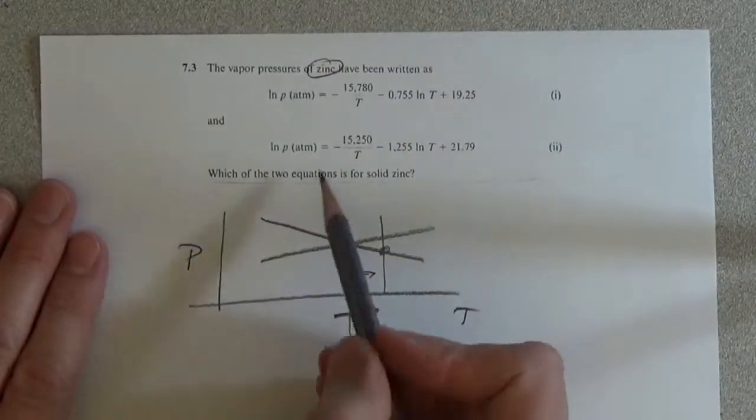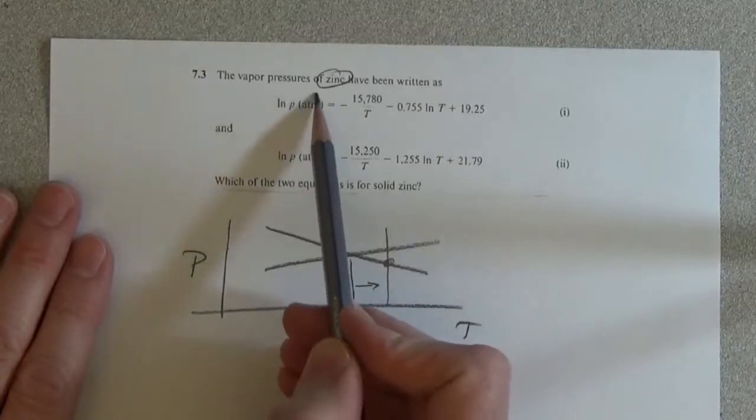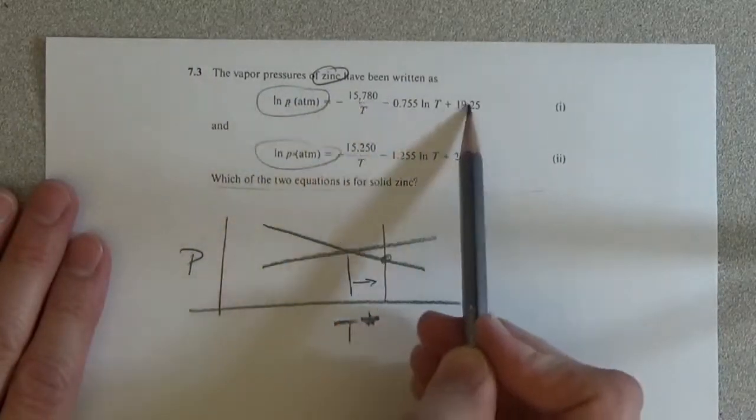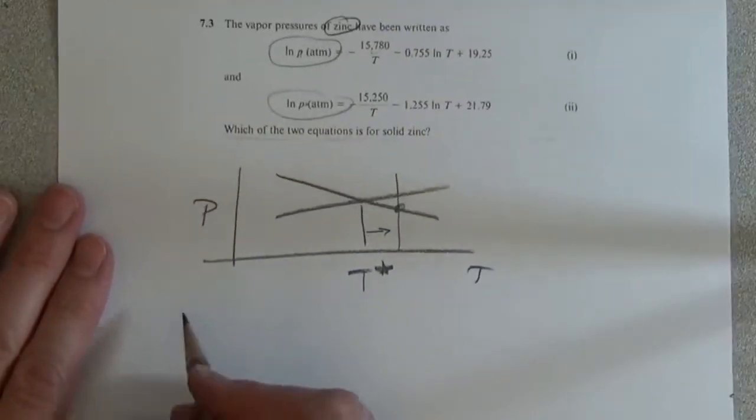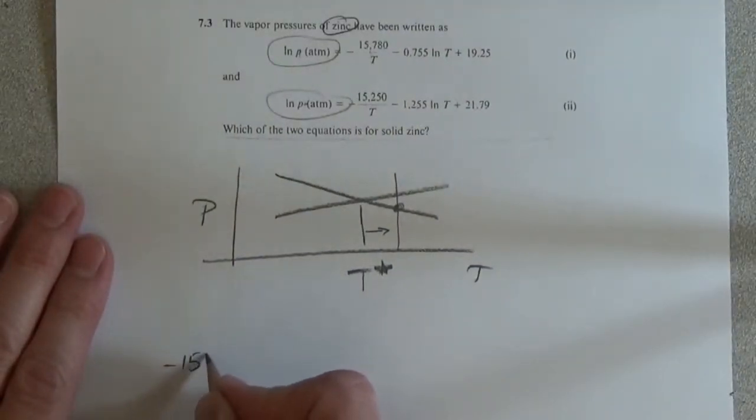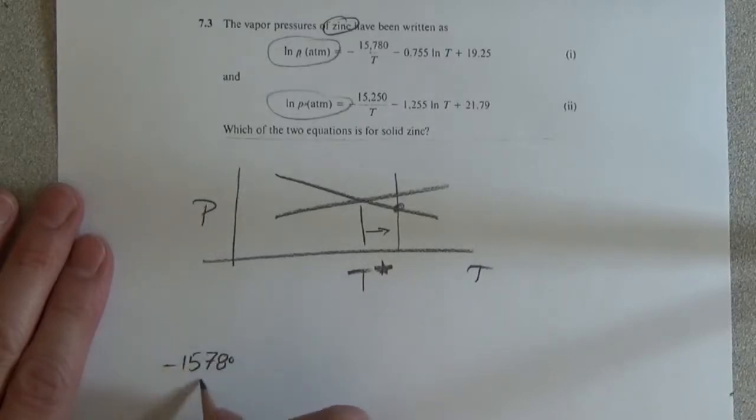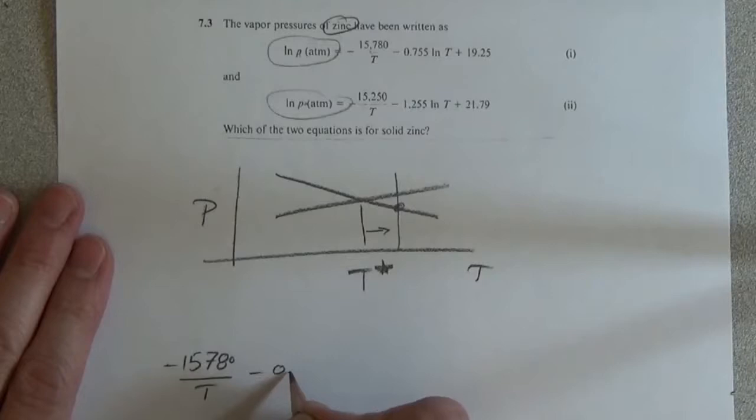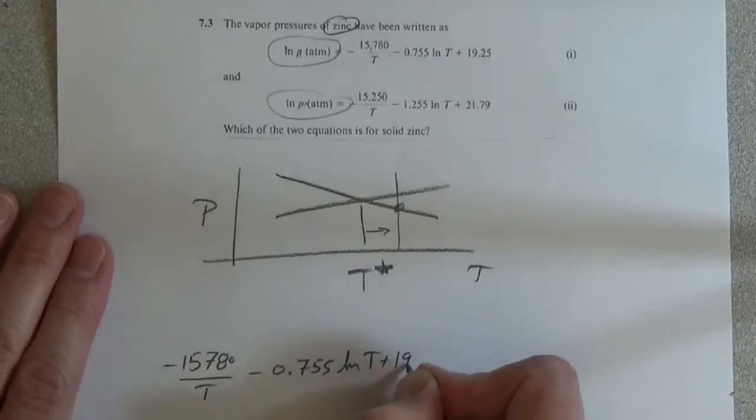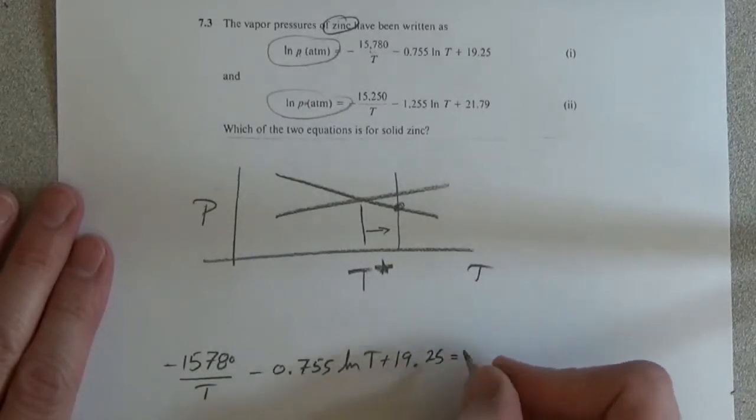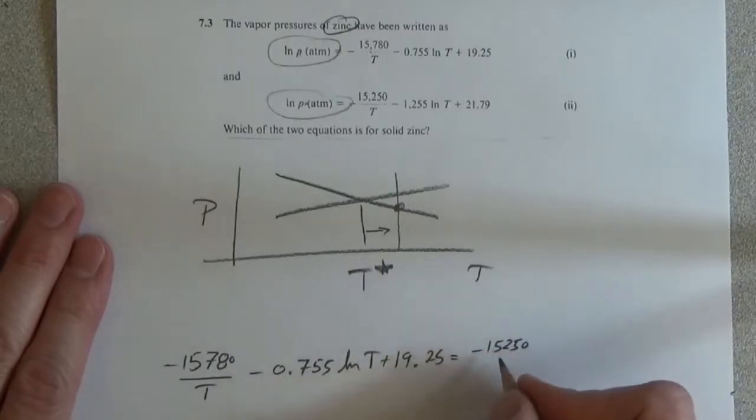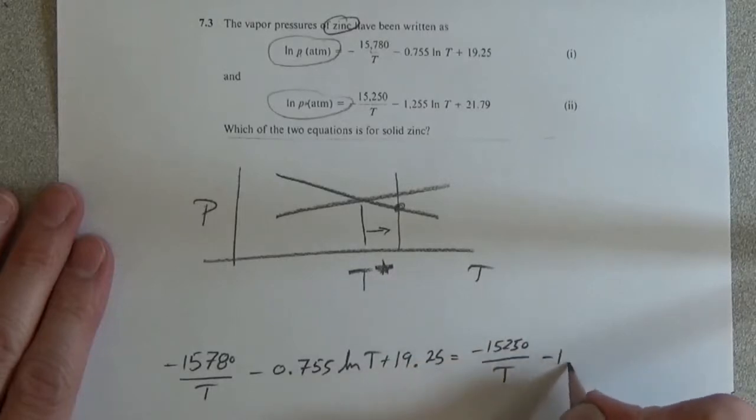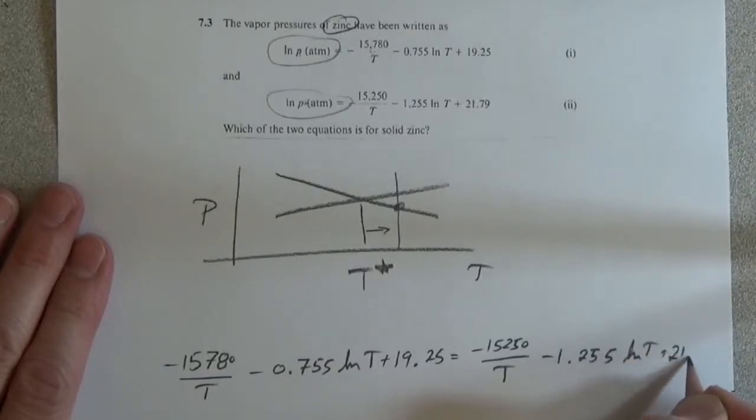So let's do that. In fact, we're just going to take and equate the natural log, so we can set this equal to each other. So we can say minus 15,780 divided by T minus 0.755 natural log of T plus 19.25 is equal to minus 15,250 divided by T minus 1.255 natural log of T plus 21.79.